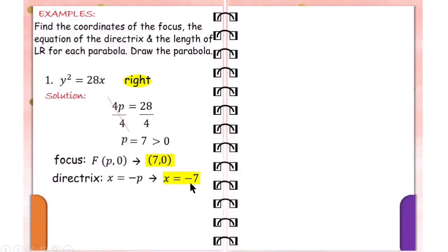Here's a technique: if the vertex is at the origin, when the value of p is positive, the directrix will be negative. And if p is negative, the value in the directrix will be positive. Also, if y appears in the given equation, the equation of the directrix uses x, and vice versa.